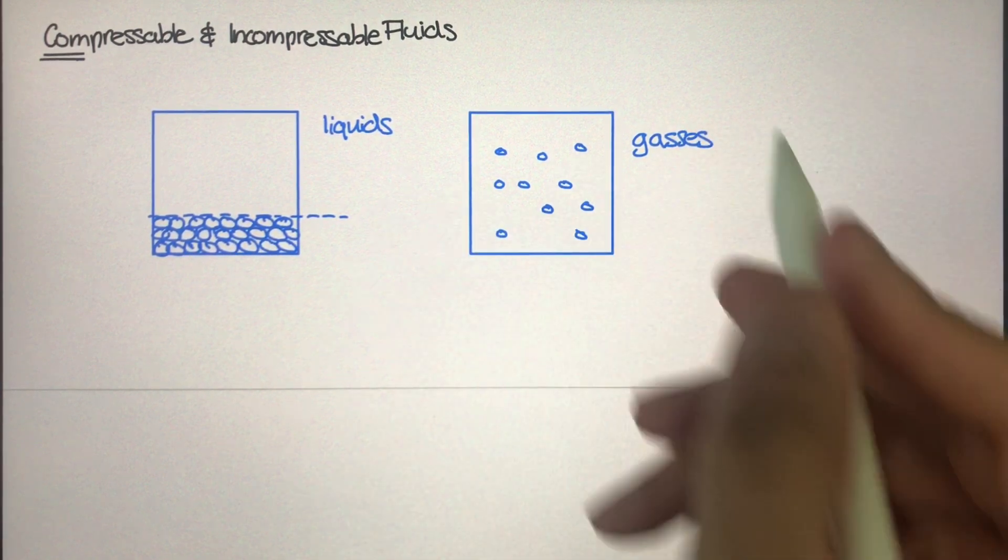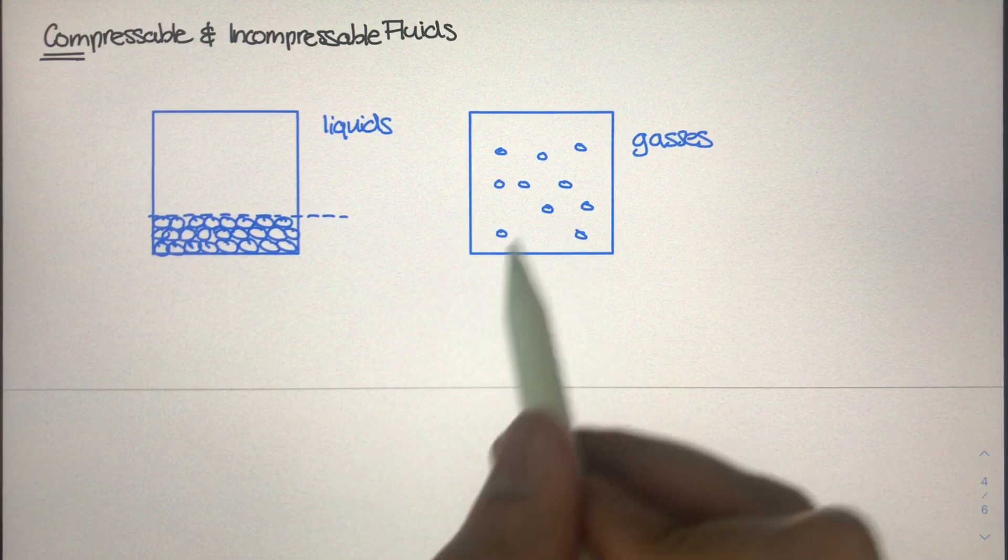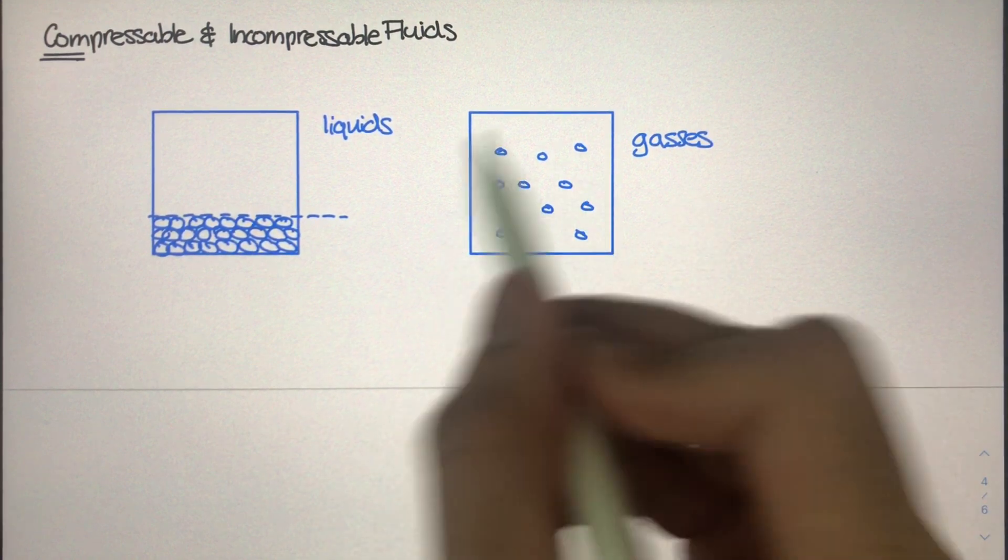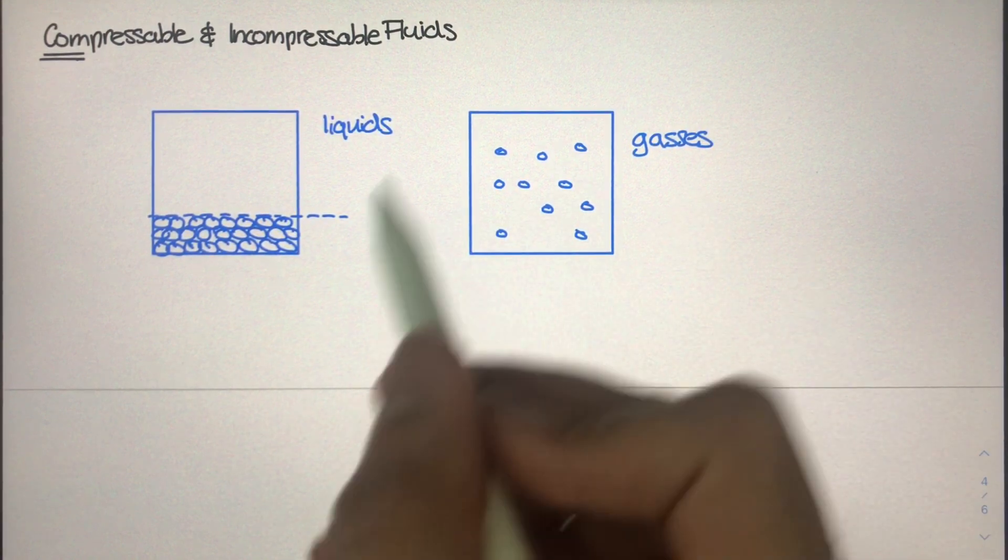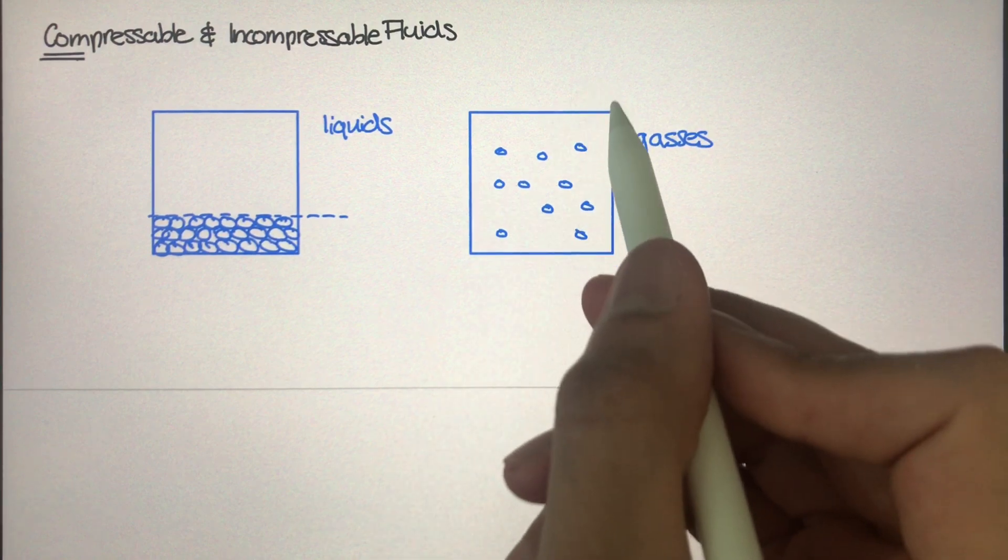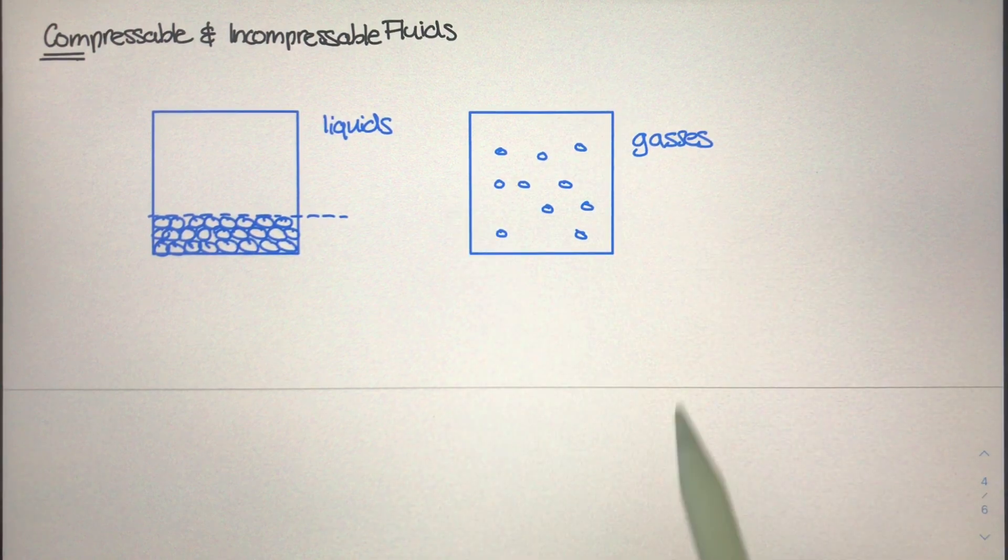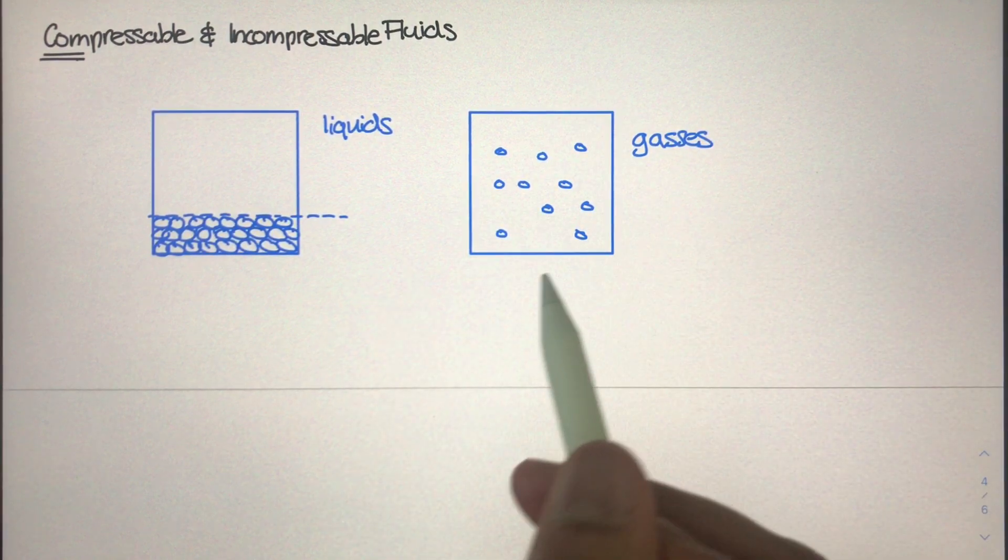And we're familiar with gases, right? If we pump air into a basketball, that is a compressible fluid. If we pump helium into a balloon, that is a compressible fluid.